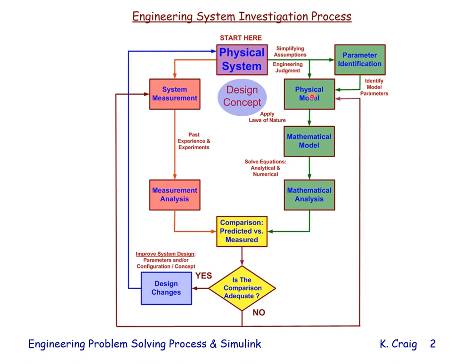The physical model will have variables and numerical values for those variables need to be determined. This is called parameter identification — here we identify model parameters. Once we have a physical model, we then apply the laws of nature — Newton's laws, Maxwell's equations — to the physical model, not to the physical system or design concept. The result is the mathematical model, the differential equations of motion.